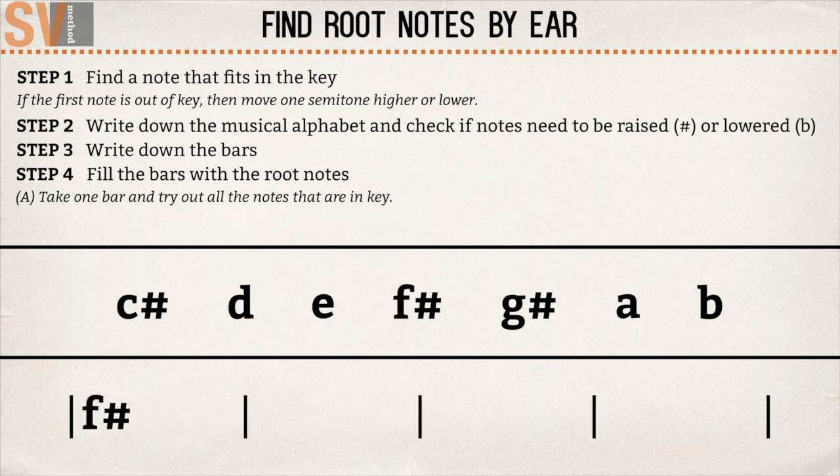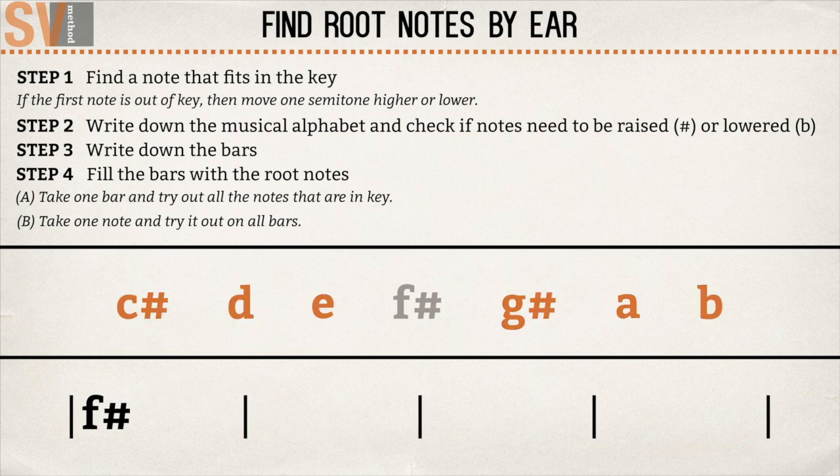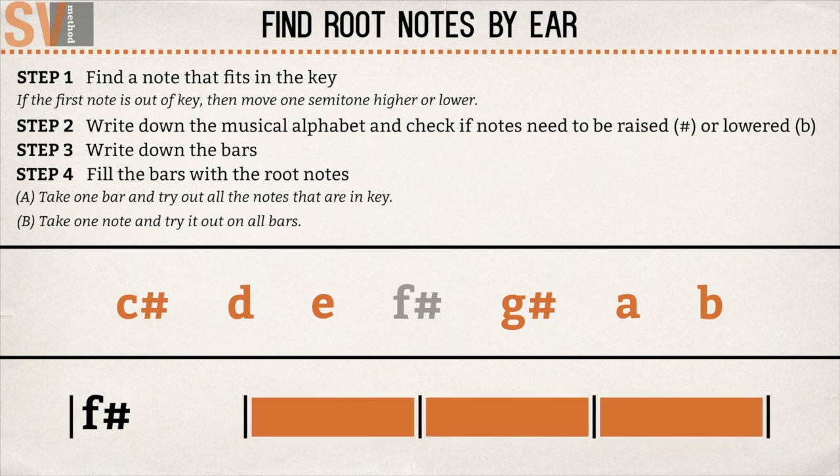Now let's take a look at the other possibility. Take one note and try it out on all bars. We already know that the note on the first bar is F sharp. If you listen closely, you can hear that this chord is not repeated in this 4 bar progression. That means that the note F sharp isn't used twice. So there are 6 notes left that can possibly fit in the remaining 3 bars.